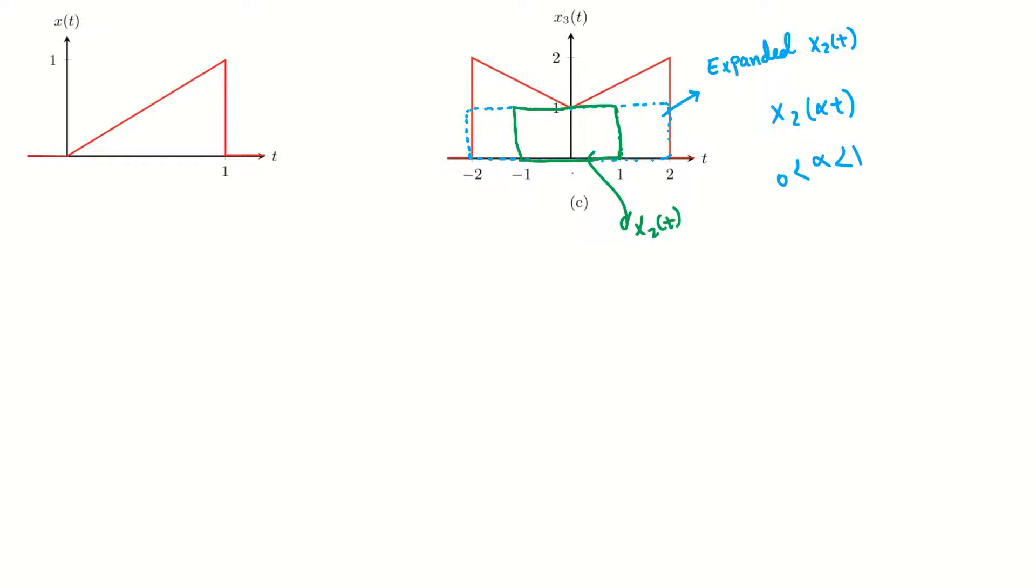And for this case, we want to make it double, so it is enough to take alpha equal to 0.5. So I can say, I can simply say, this blue part, which is the expanded version of X2(t), is actually X2 of 0.5t.